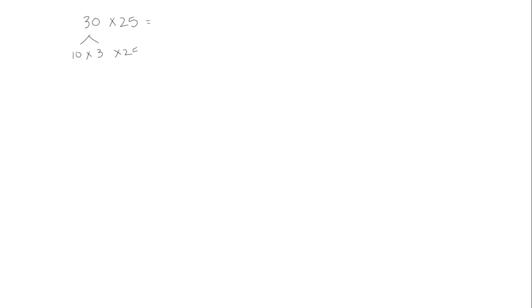Let's start with the problem 30 times 25. As we've done before, we can decompose 30 into 10 times 3 times 25, and then using the associative property we can group the 3 and the 25 together.